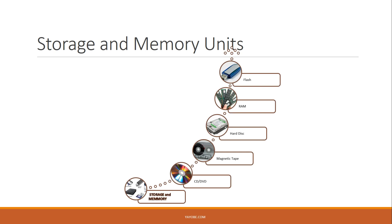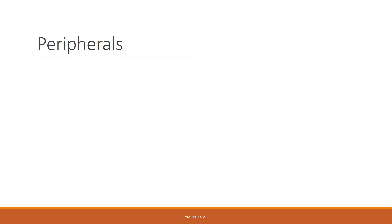It has to cover the output device as well. The storage device can be used as a storage device. Types include: flash, RAM, temporary memory, hard disk, magnetic disk, DVD, CD, and storage memory. The storage device can be used as a storage device.